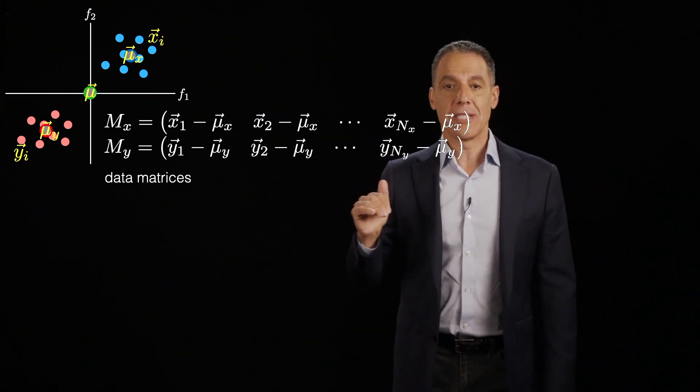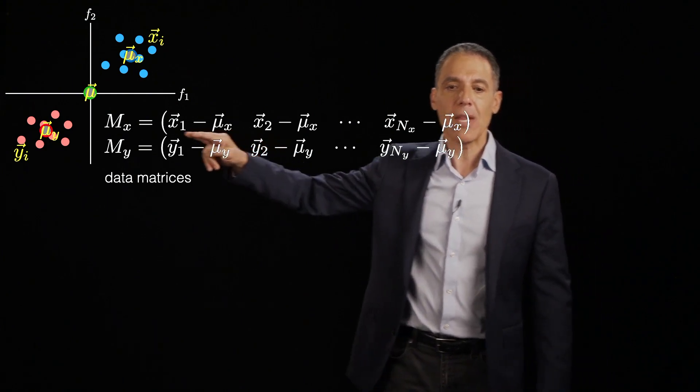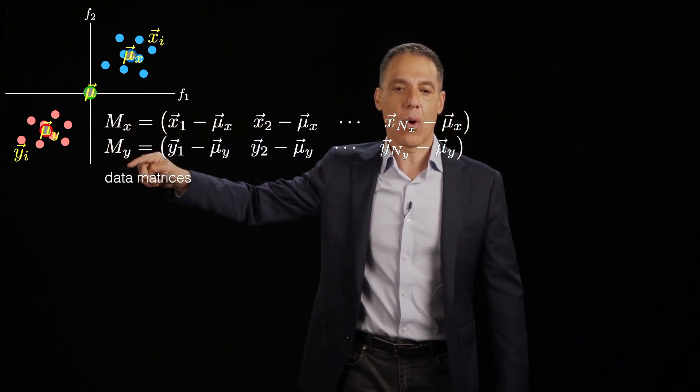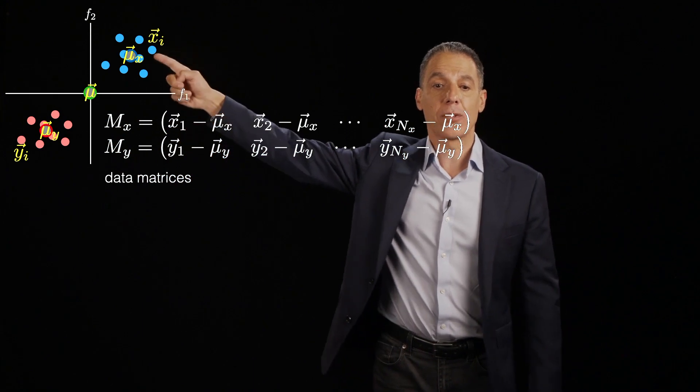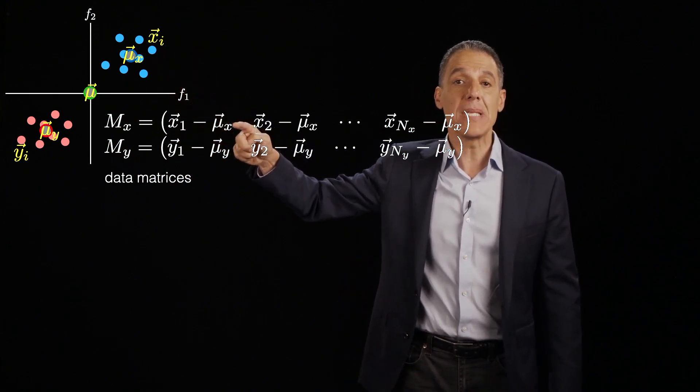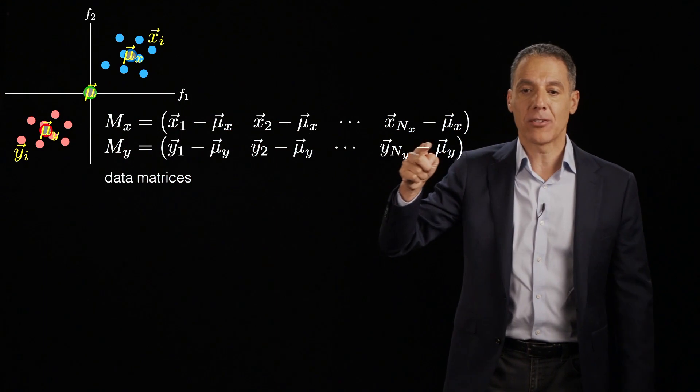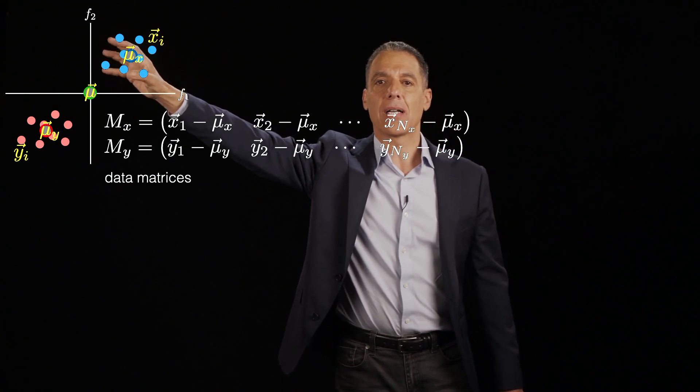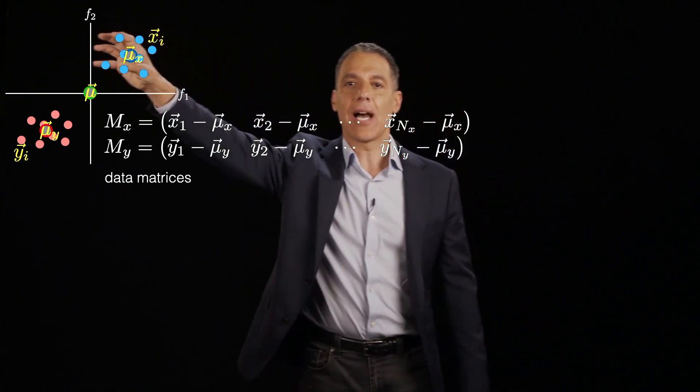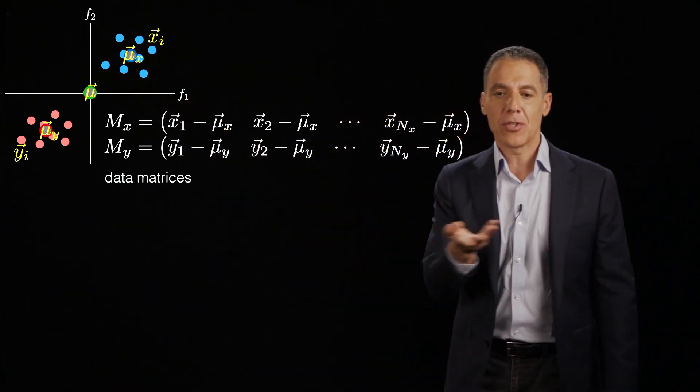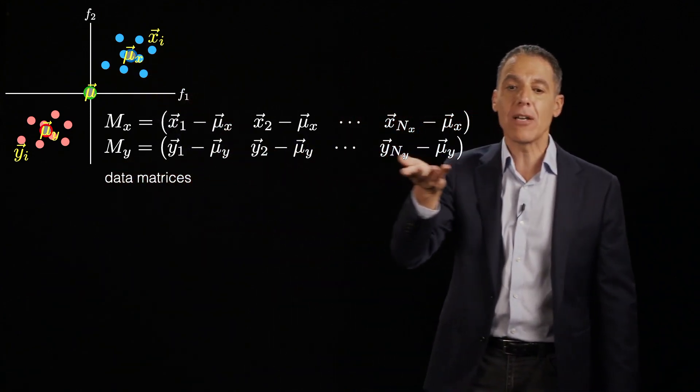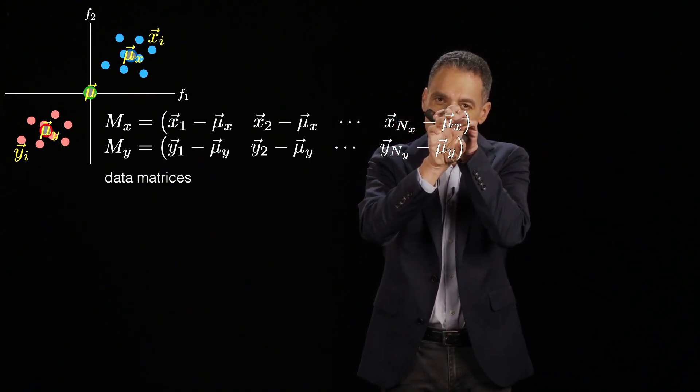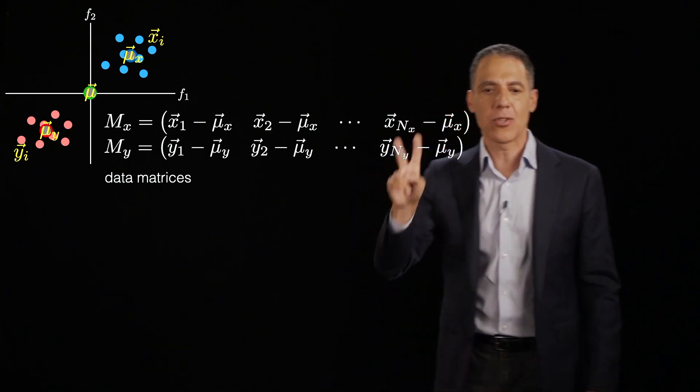Let me define two matrices now. These are the data matrices. These are the zero mean data. So all I'm going to do is define the matrix mx and my. mx is x1, the first data point, minus the mean of that class. And then x2 minus the mean up to x and x minus the mean. So think about taking that blue cloud there and just zero meaning it on top of its mean right there. And I'm going to do the same thing for the y matrix. I'm going to subtract the mean of the y data points from each of those. And so those are now those two clouds are essentially both sitting over the origin because I've subtracted their mean. So those are the two data matrices.